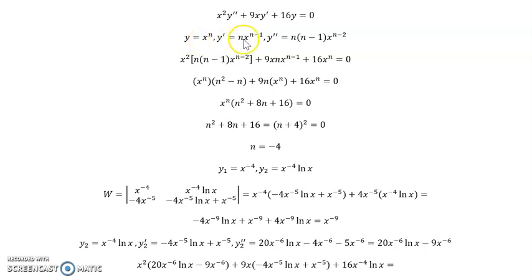Then we're going to take our derivatives: y prime is x to the n minus 1, and then we bring the n down. y double prime, we bring our n minus 1 down as a constant, and then we reduce the power by 1, so we get x to the n minus 2. And we substitute this into our equation.